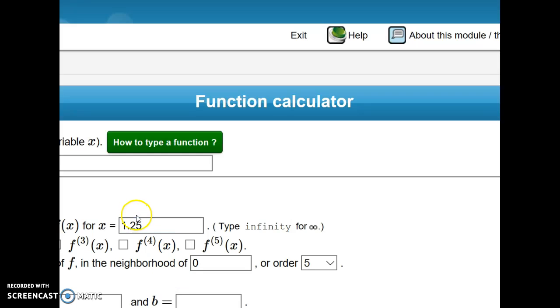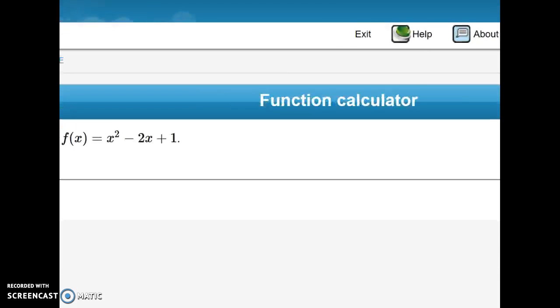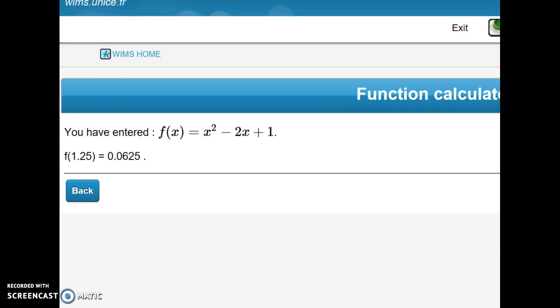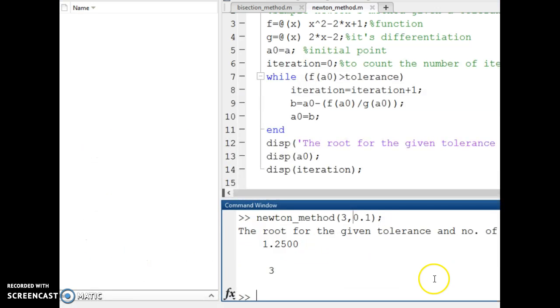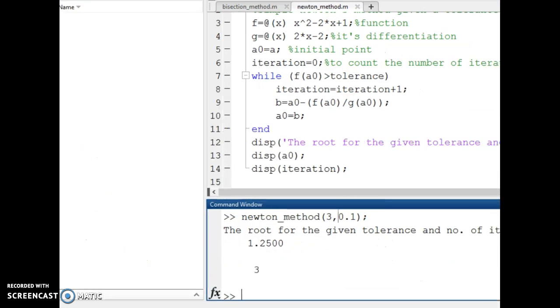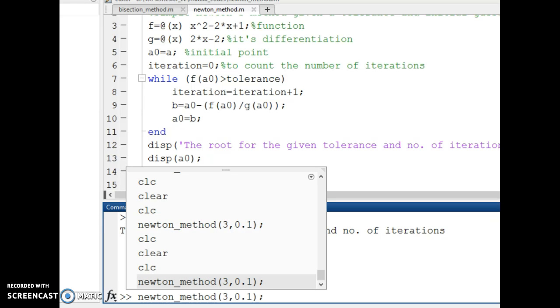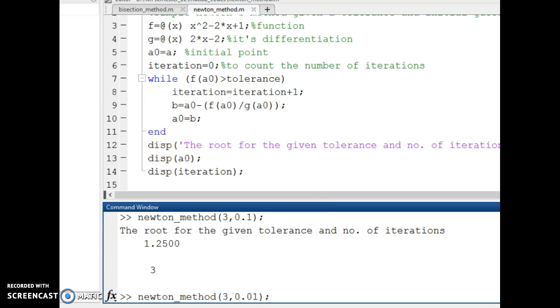So for this function, if I see the value at 1.25 is 0.0625. So 0.0625 is well within the tolerance level. Similarly if I want, what I could do is just decrease the tolerance level. Then it requires 6 iterations and the value of the root is 1.0313.